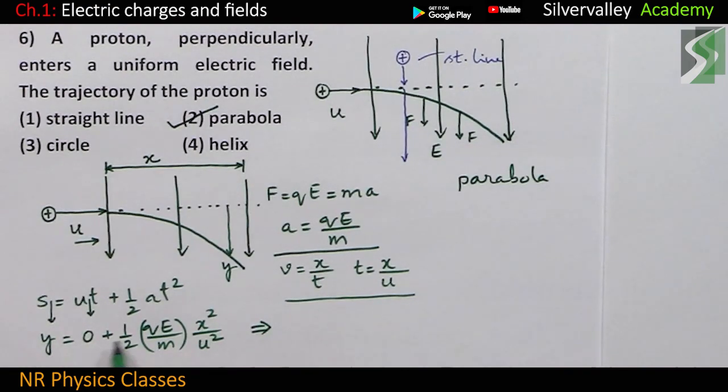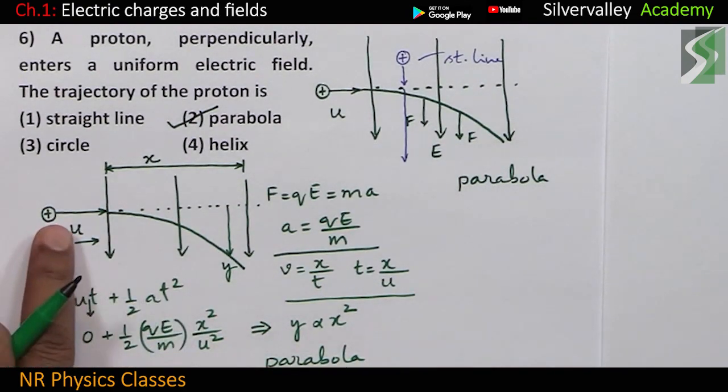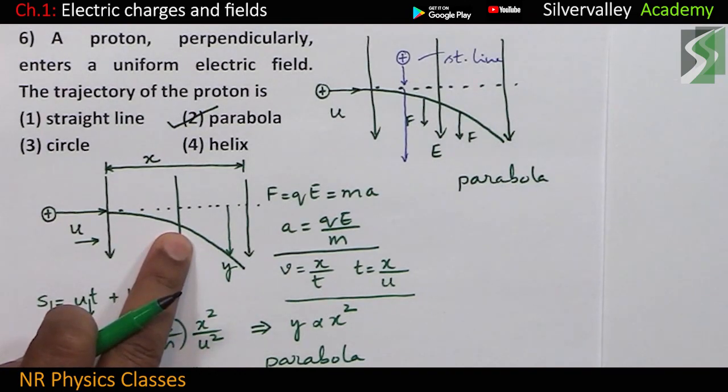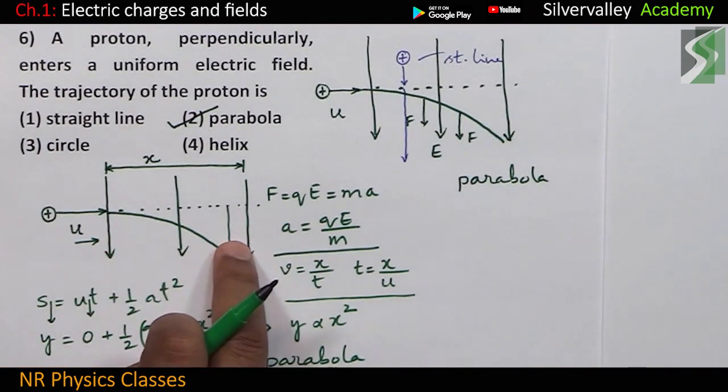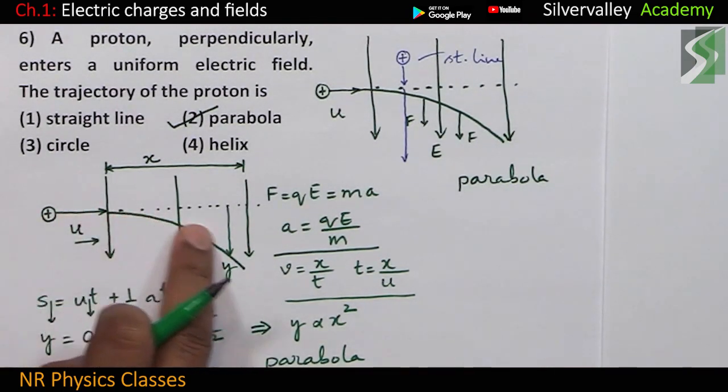Displacement is proportional to x square. Displacement is proportional to x square. And this represents a parabola, isn't it? Parabola. That is why path of a charged particle entering a uniform electric field perpendicularly is a parabola.